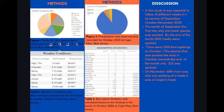Hi, my name is Imani Mack and I will be informing you on our discussion part of our lab. In the study, we reported and followed behind 21 different hawks in the months of September through October, November 2020. The month of September was the first day the hawk species were spotted. By the end of the month, a total of 1,500 hawks were spotted.